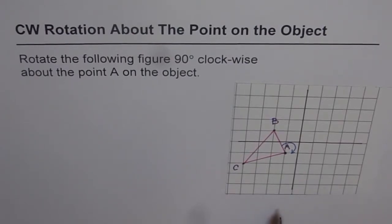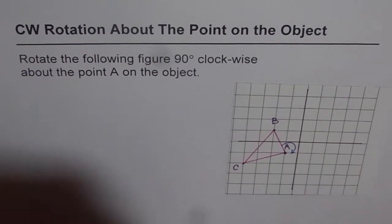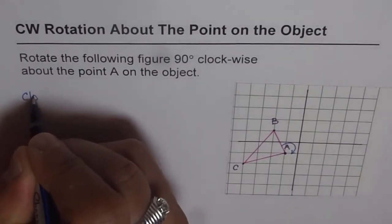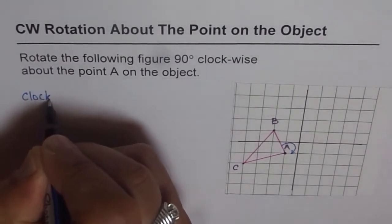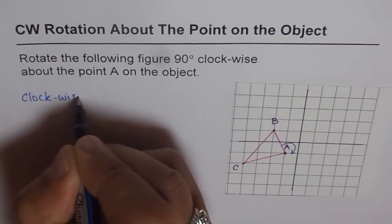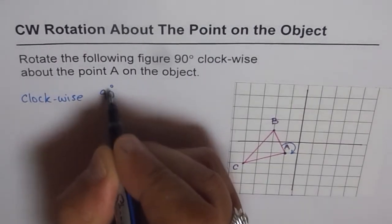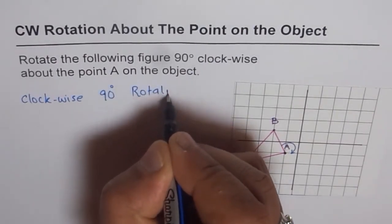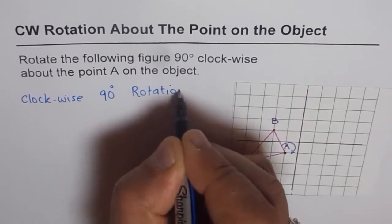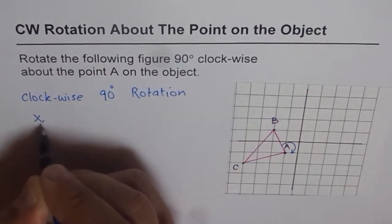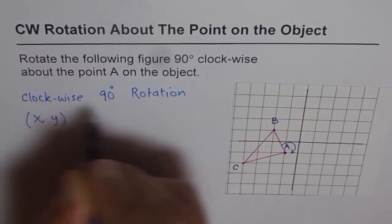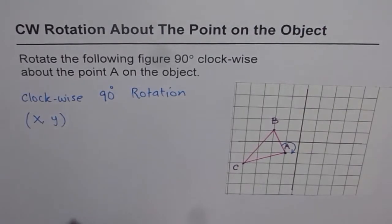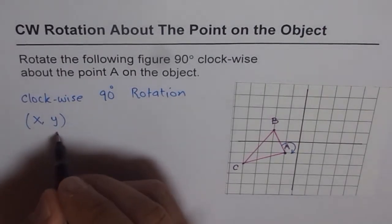When you do a clockwise rotation of 90 degrees, how do the coordinate points change? In a clockwise rotation of 90 degrees, if the original points are x and y, then what happens to the transformed points?